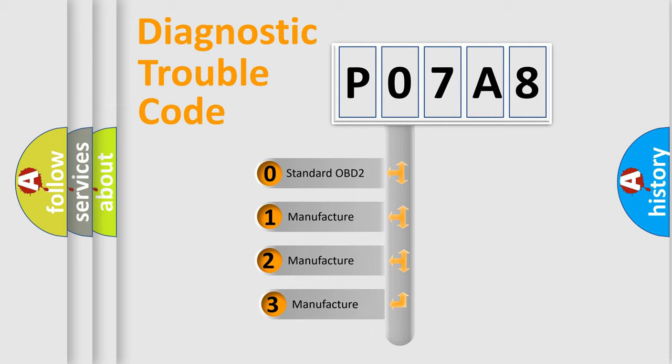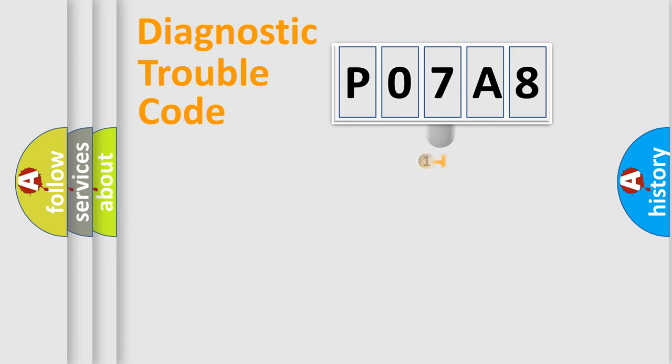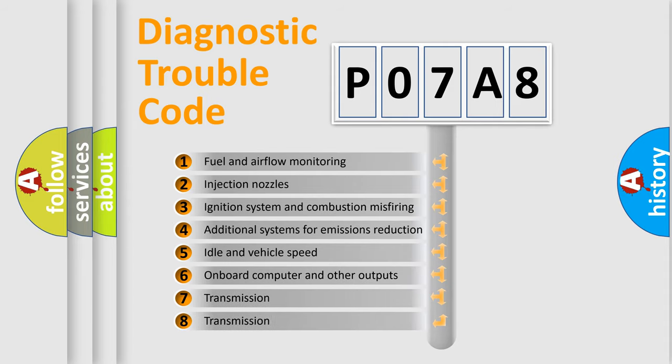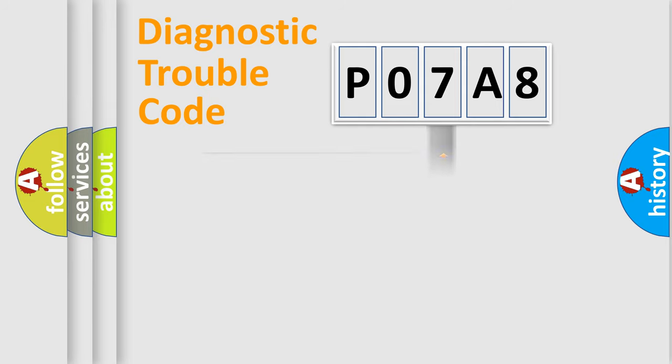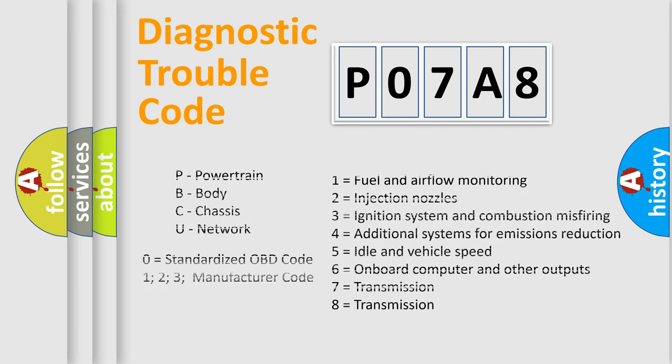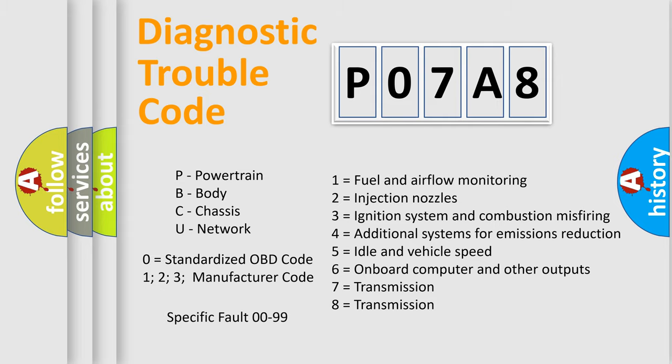If the second character is expressed as zero, it is a standardized error. In the case of numbers 1, 2, 3, it is a more prestigious expression of the car-specific error. The third character specifies a subset of errors. The distribution shown is valid only for the standardized DTC code. Only the last two characters define the specific fault of the group. Let's not forget that such a division is valid only if the other character code is expressed by the number zero.